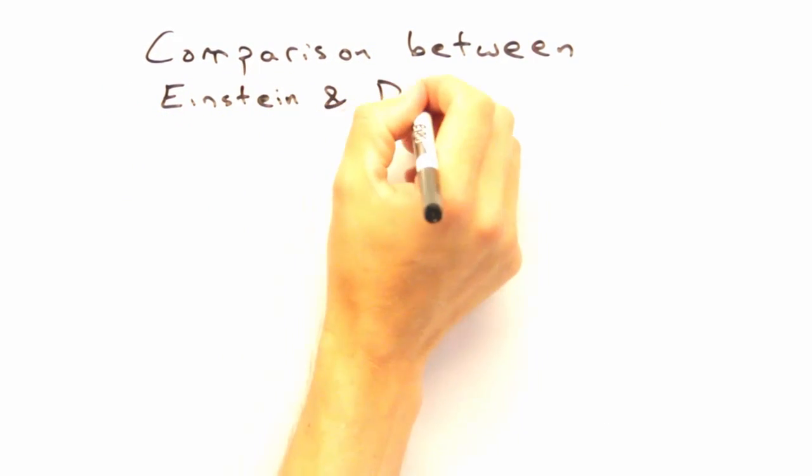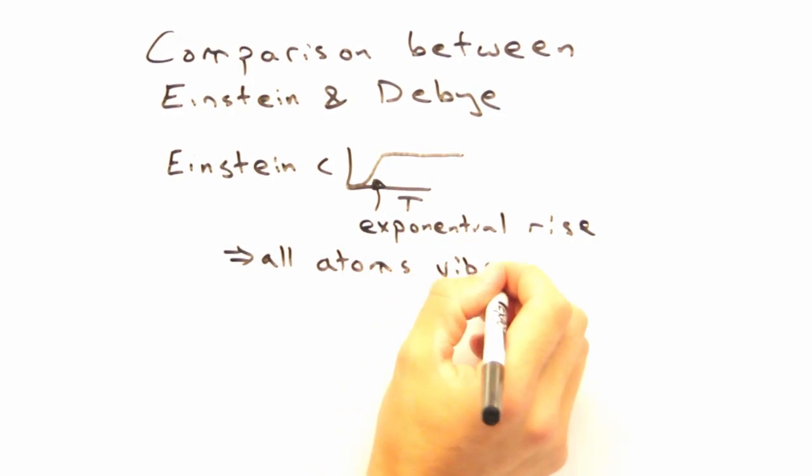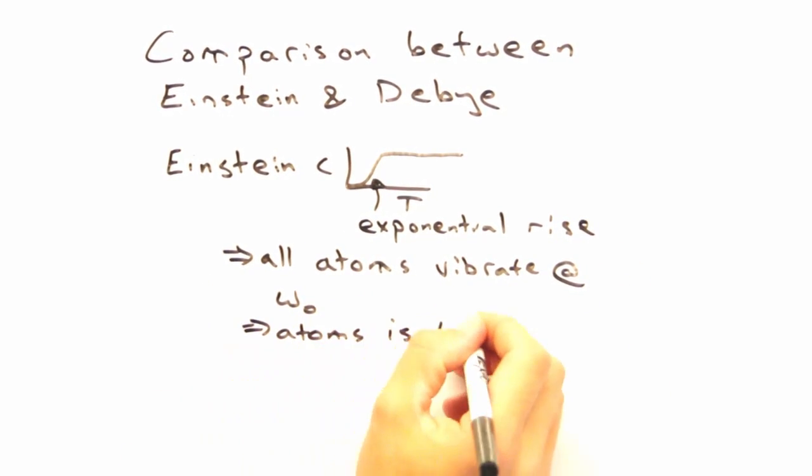Yeah, so Einstein assumed that all the atoms vibrated at the same frequency. At that point, we don't even have a dispersion relationship because we don't even have wave vectors. Each atom just sits there and vibrates without any interaction with its neighbors.